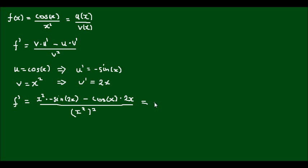So now tidying up this expression a little bit, I get negative x squared sin(x) minus 2x cos(x) all over x to the power of 4, as I can expand this index into the parentheses.